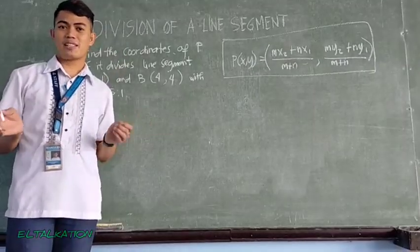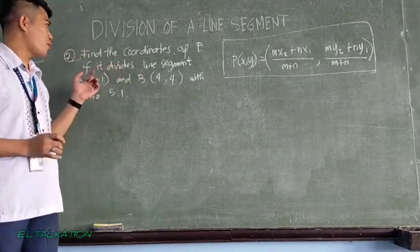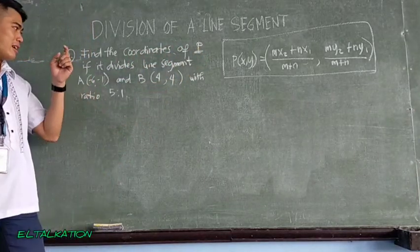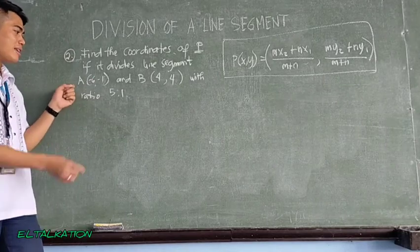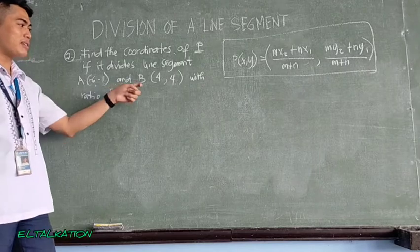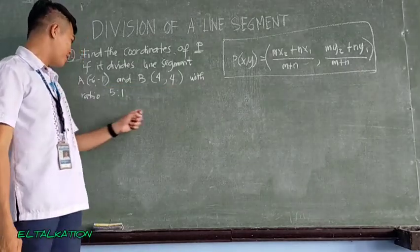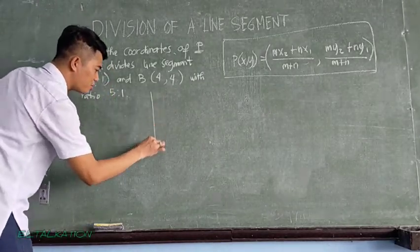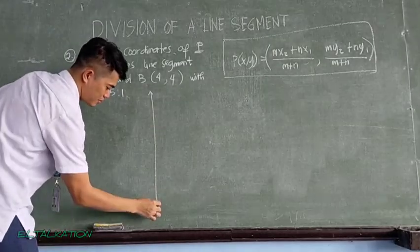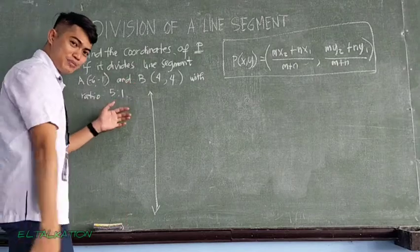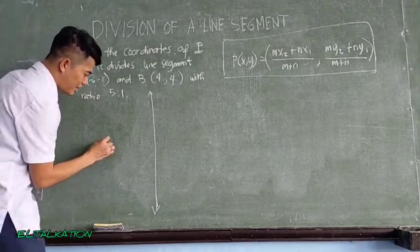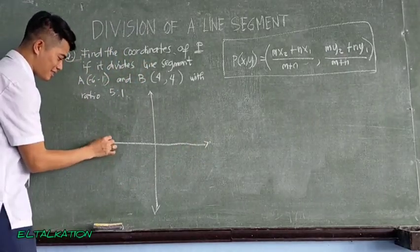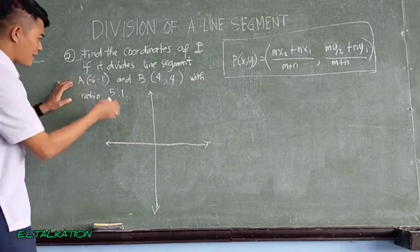Okay, let's have another example for internal division. So for example, find the coordinates of P if it divides line segment from negative 6 and negative 1, and point B is 4 and positive 4, with ratio of 5 is to 1. So first thing to consider is we need to graph. So let me draw the graph. So the vertical line is the y-axis, that's correct. But the horizontal line is the x-axis, that's correct.